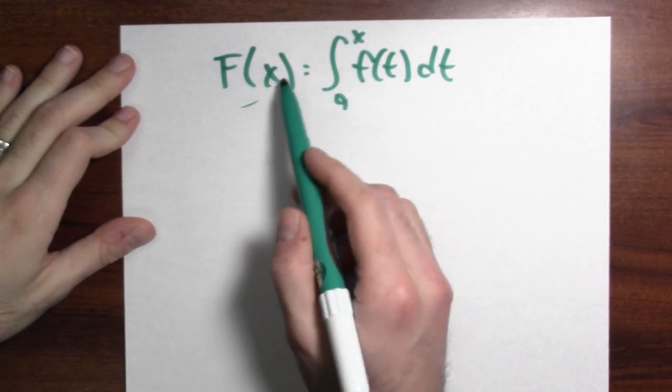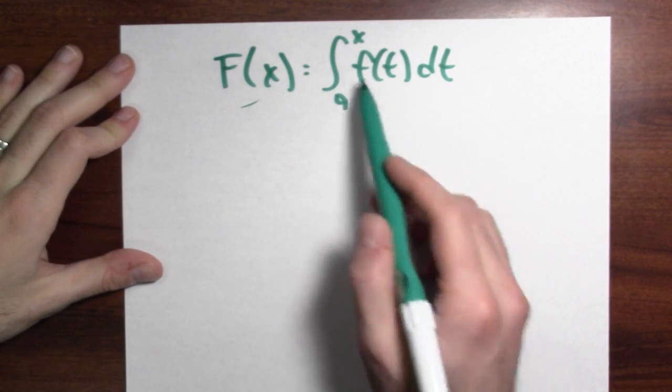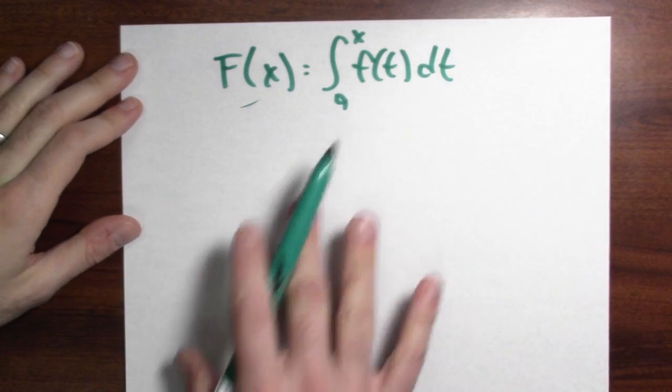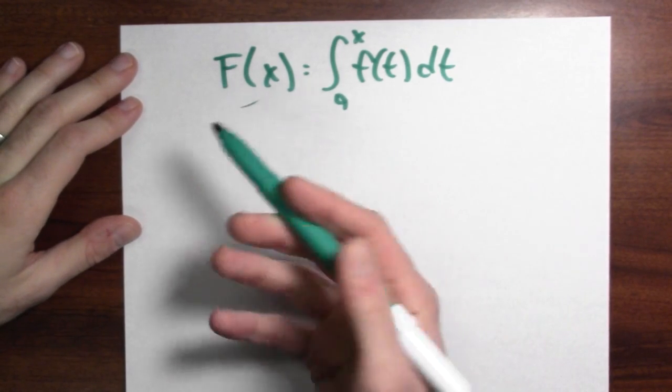We've seen a bit of evidence for this already. Suppose I got the accumulation function, so big F(x) is the integral from a to x of f(t) dt. And now I can ask, how is the accumulation function changing?